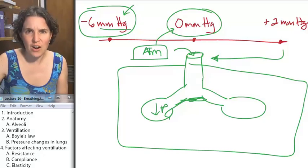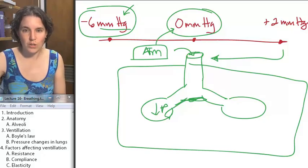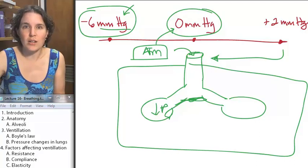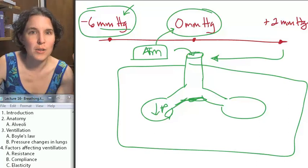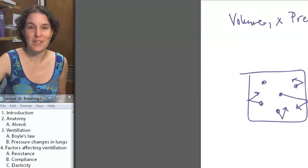If I wanted to get the air out again, what would you do? Just increase the pressure inside the alveoli. The question is, how do we do that?